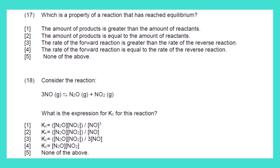When we talk about a reaction that has reached equilibrium, we are talking about the rate of the forward reaction being equal to the rate of the reverse reaction. We normally use the double-arrow symbol to indicate that the reaction has reached its equilibrium.